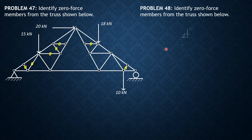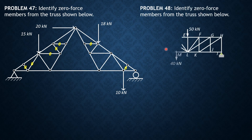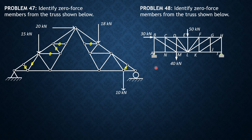We proceed to problem 48: identify zero-force members from the truss shown. For Case 1, there are two members at the support, but there are reactions — one vertical reaction at the roller support, and at the pin support, vertical and horizontal components. The horizontal component of reaction is equal to 30 kN to the left.